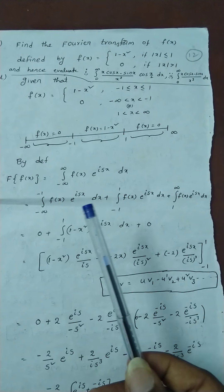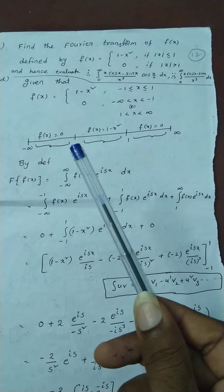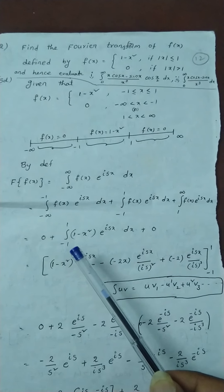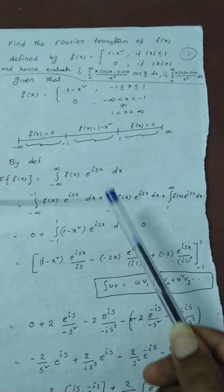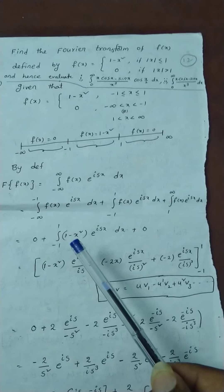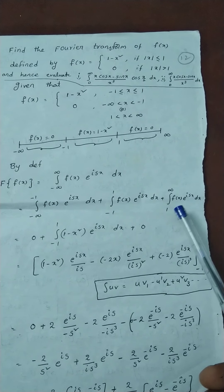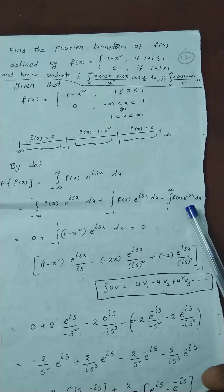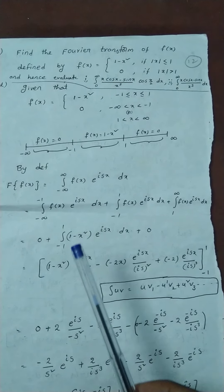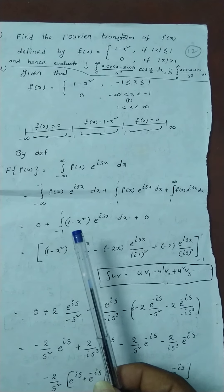In the first integral from minus infinity to minus 1, f(x) equals 0, so that term vanishes. In the second integral from minus 1 to 1, f(x) equals 1 minus x squared, so we substitute that: integral from minus 1 to 1 of (1 minus x squared) times e to the power isx dx. In the interval 1 to infinity, f(x) is also 0, so the third integral also vanishes. Only the second integration exists.